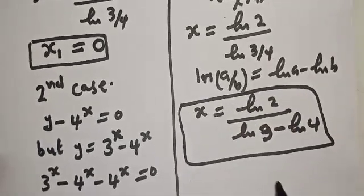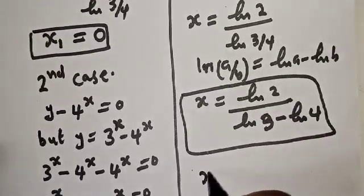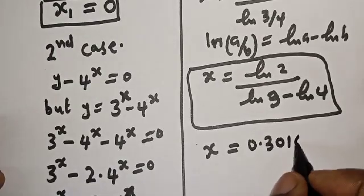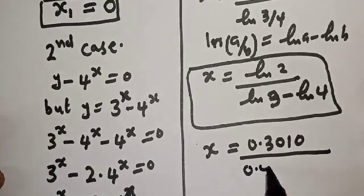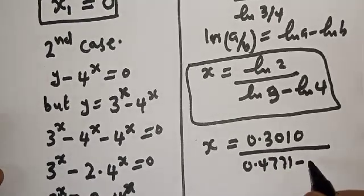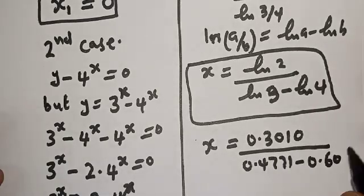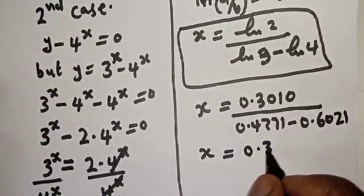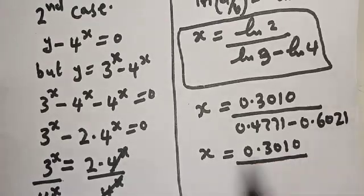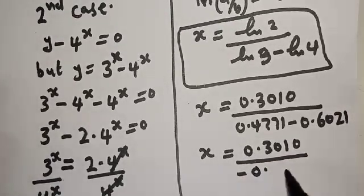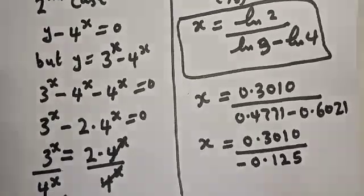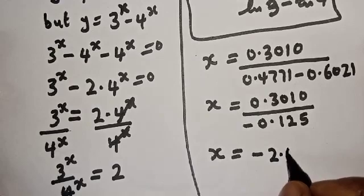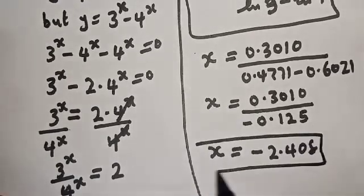We can simplify further using a calculator. Natural log of 2 is 0.3010; natural log of 3 is 0.4771; natural log of 4 is 0.6021. So s equals 0.3010 divided by 0.4771 minus 0.6021, which gives 0.3010 divided by minus 0.1250. Therefore s equals minus 2.408. This is also the final answer.